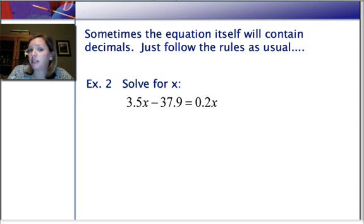So sometimes the equation itself will have decimals in it. We're still going to follow the rules as usual. Here we have 3.5x - 37.9 = 0.2x. Now, do I need to distribute? No. Do I need to combine like terms on the left? No. Not on the right either. But I can move my variables.